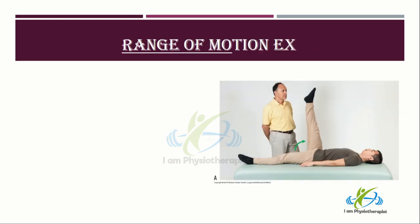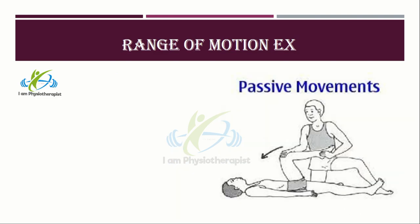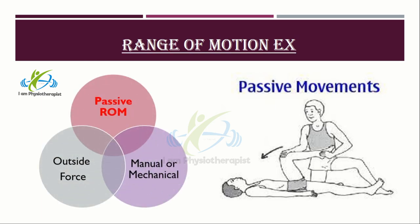Active range of motion is movement of a joint provided entirely by the individual performing the exercise, with no outside force aiding in the movement. Passive range of motion exercises involve motion imparted to a segment of the body by another individual, machine, or other outside force, or produced by voluntary effort of another segment of the patient's own body.